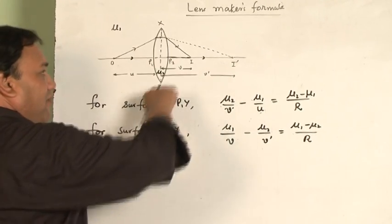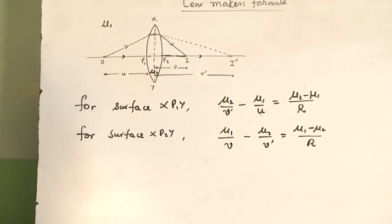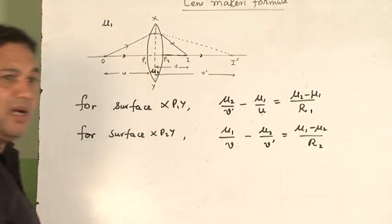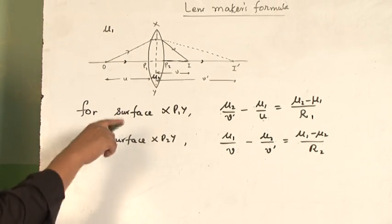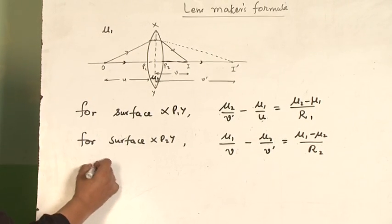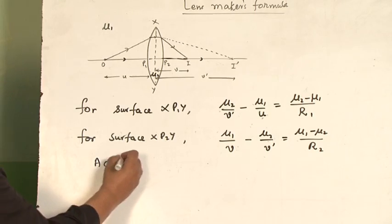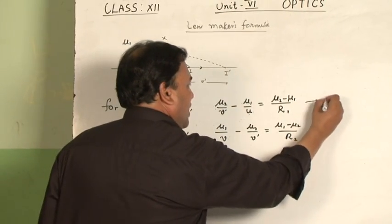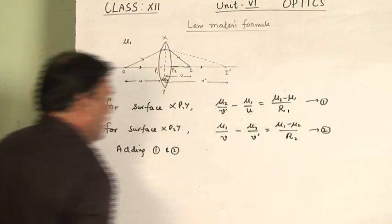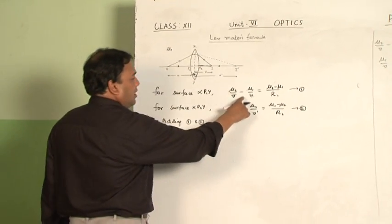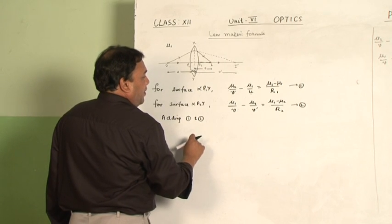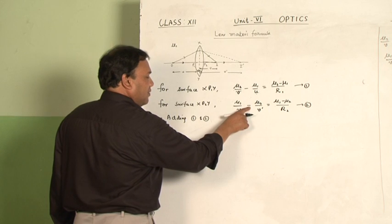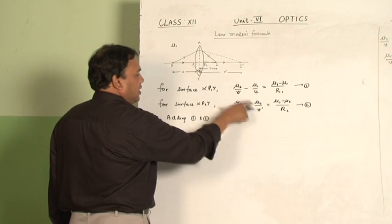Since these two surfaces have different radii of curvature, this is r1 and this will be r2. Now these two equations have to be added. Adding equations 1 and 2, you can see that the μ2/v' term appears with a negative sign in one equation and positive in the other — these two cancel. The remaining terms give: μ1/v minus μ1/u.